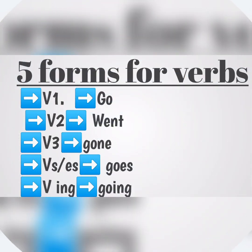Let's look at another example. The verb is 'go'. Base form is go, past form is went, past participle form is gone, s or es form is goes, and the ing form is going.